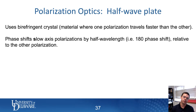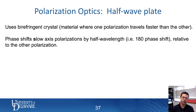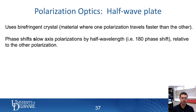Here's another fun polarization optic called a half wave plate. Basically what it does is it uses a birefringent crystal. What does birefringent mean? It means it's a material where one polarization travels at a different speed of light than the other polarization. These are always anisotropic crystals.